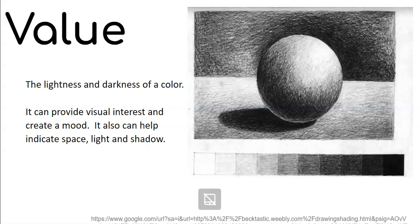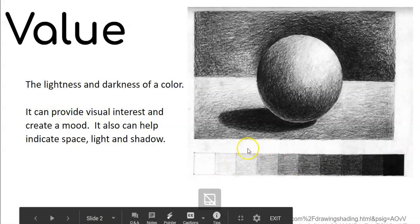Value, as we remember, is the lightness and the darkness of a color. It can provide visual interest and create a mood, and it can also help to indicate space using light and shadow. This is a very moody picture because of the different values in it, but the circle becomes a 3D object because of all the different shades inside of it, especially the shades that indicate shadow and the lightest values, which are the highlight. Down here we can see a value scale where we're changing the pressure and the amount we're coloring in order to create those dark and light values.